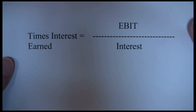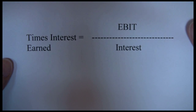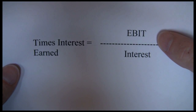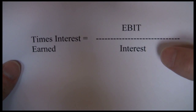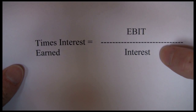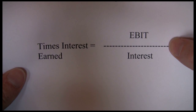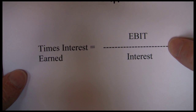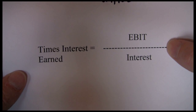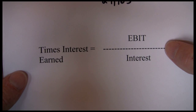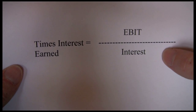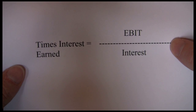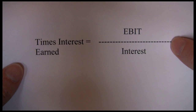Next up we have our times interest earned, which looks at how easily the company can make its interest payments. We take our earnings before interest and taxes divided by interest expense. The idea is this is money that's available for interest payments. The higher this number is, the more easily we can meet our interest payments. Ideally we would like to see this be in at least the high single digits, so five or higher. If it starts to get too low — two or three — we're still able to meet our interest payments, but any downturn in earnings or profitability could lead us into a bankruptcy situation. The higher this number is, the more cushion we have and the more comfortable we are at paying off our interest obligations.